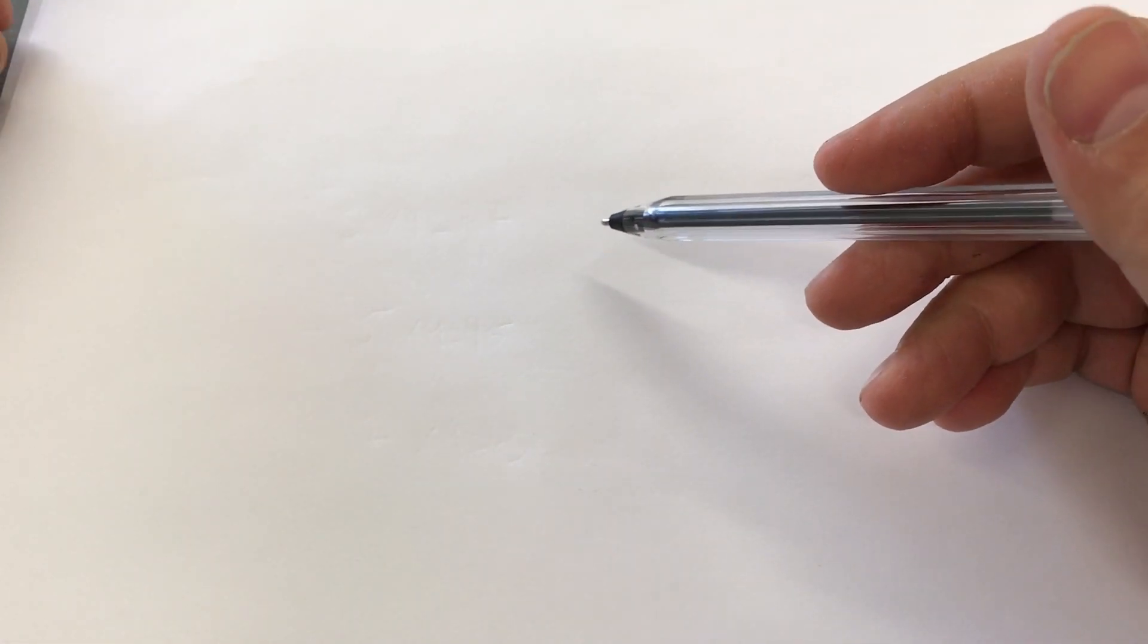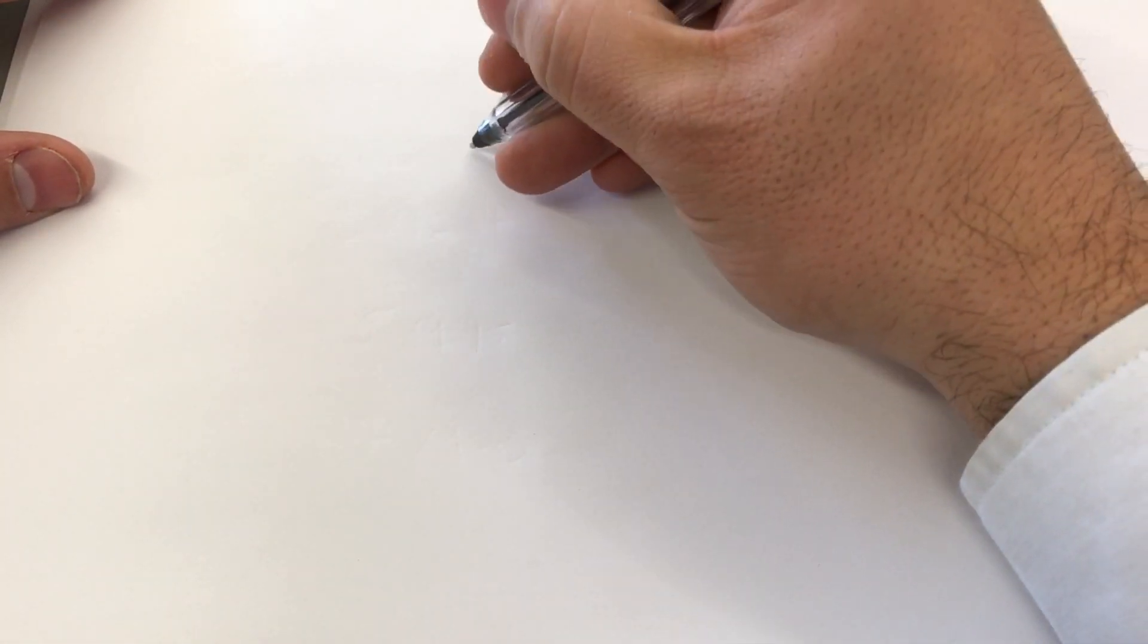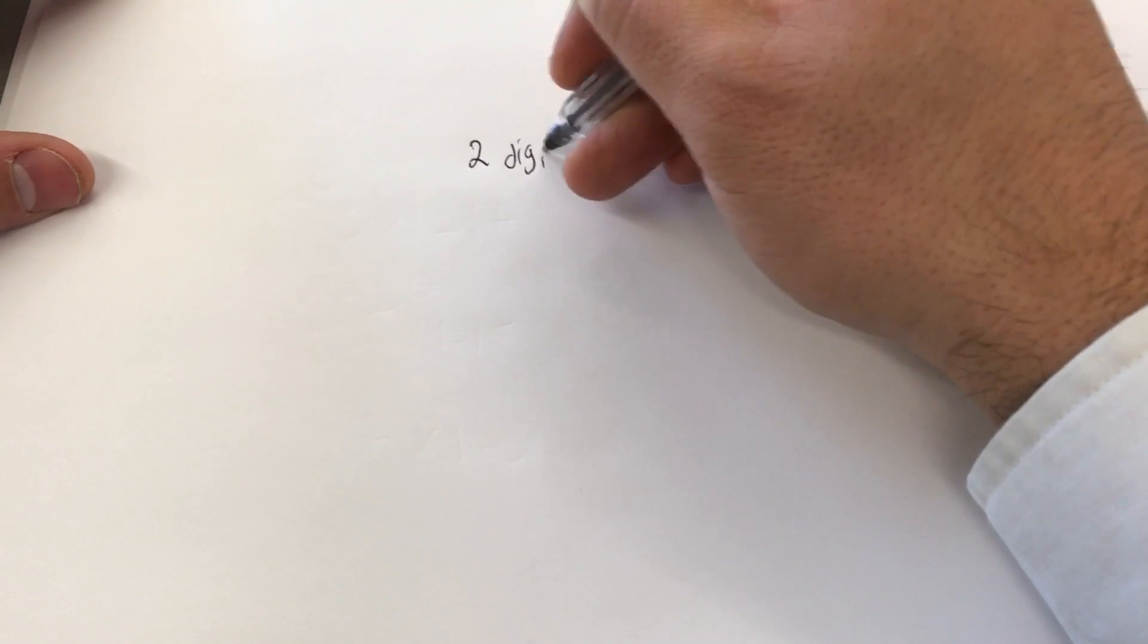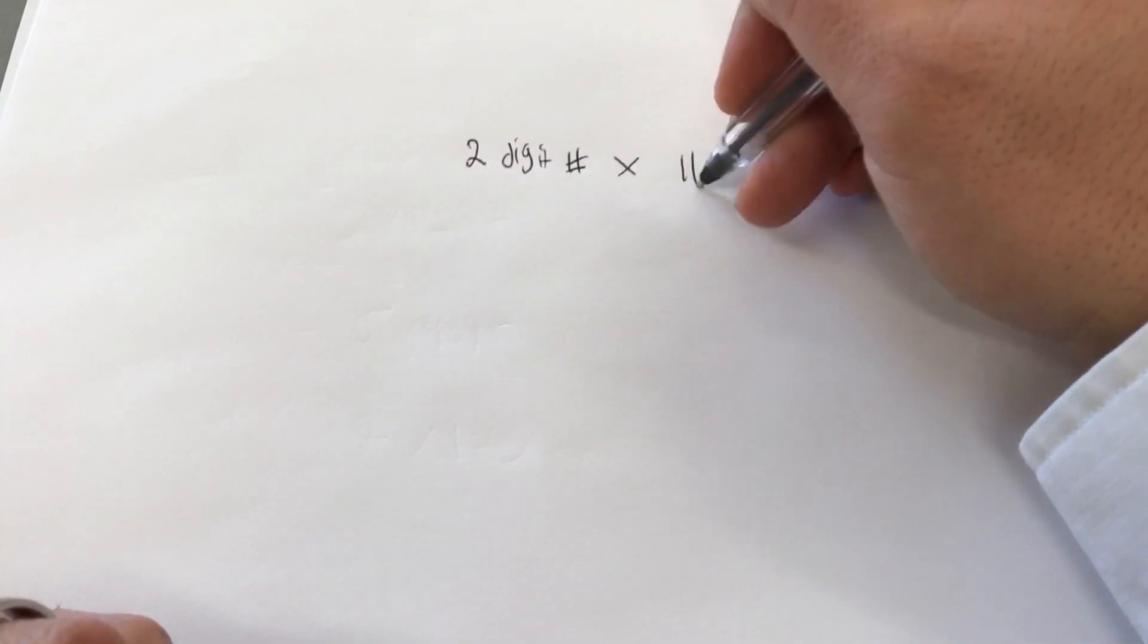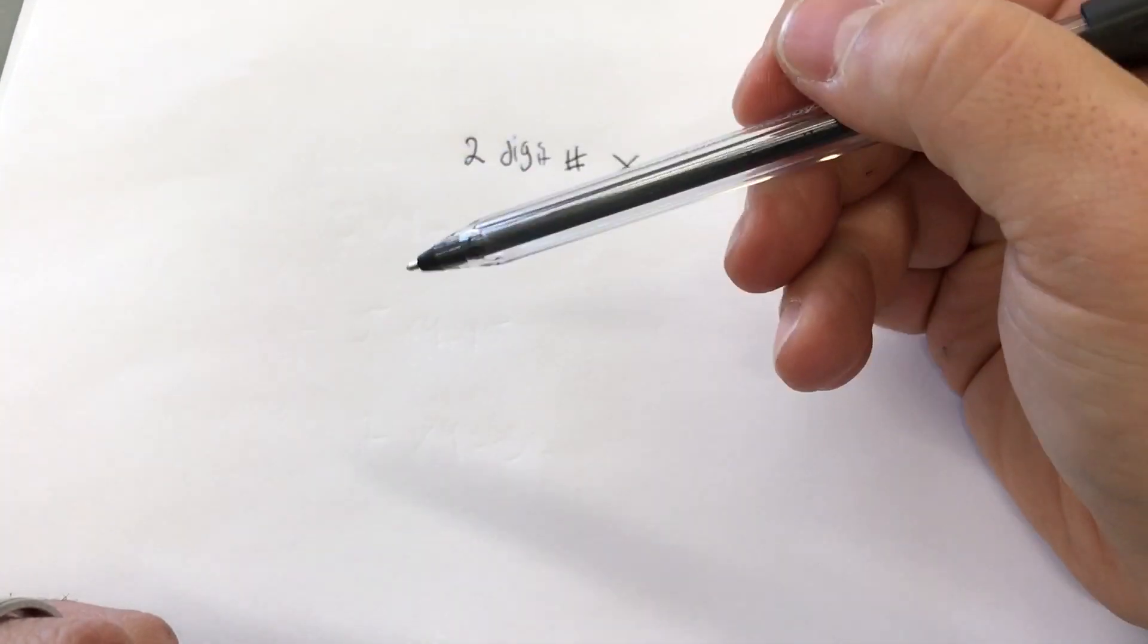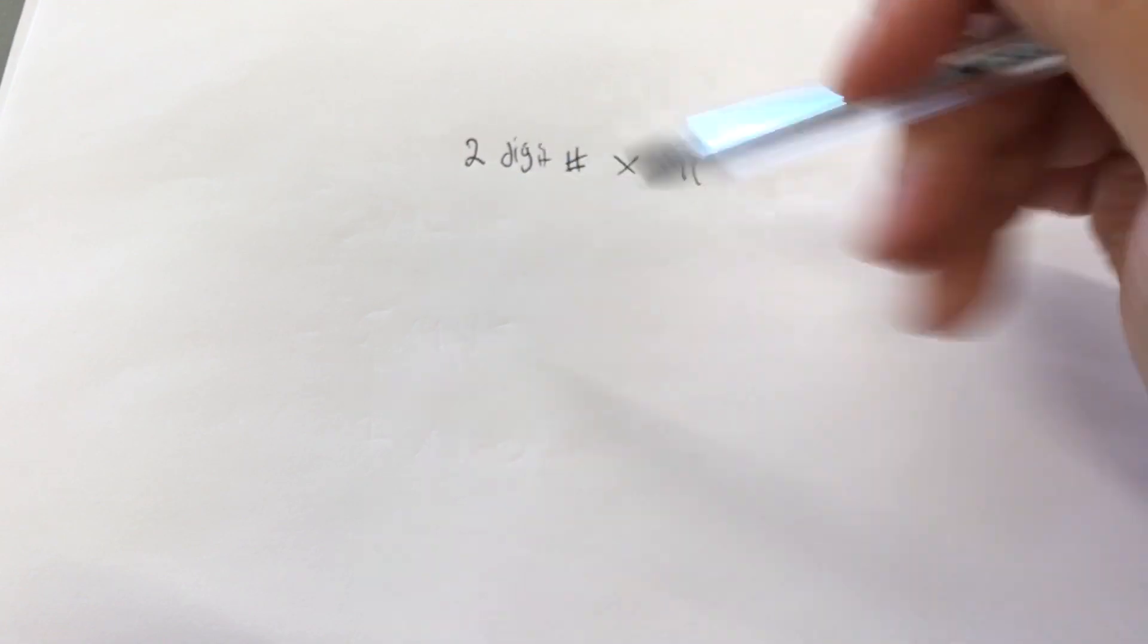Hey everybody, I'm here today to show you how to multiply any two-digit number by 11. So we're going to take a two-digit number and we're going to multiply it by 11. It's a very simple math trick and I'm going to do my best to keep the camera steady throughout this video. I apologize about the shaky camera.